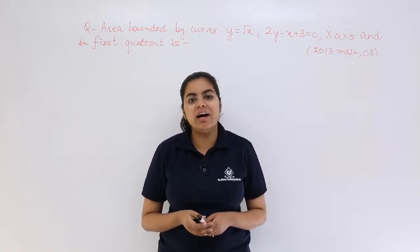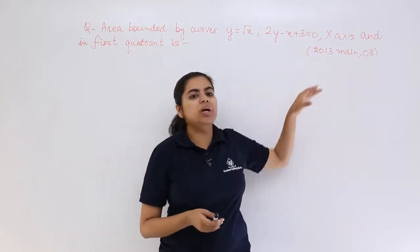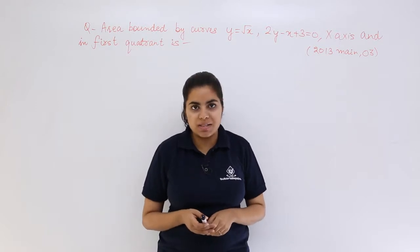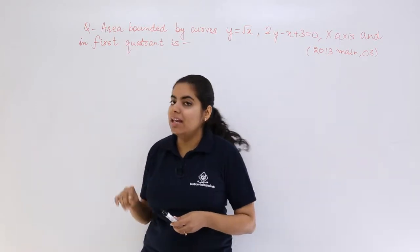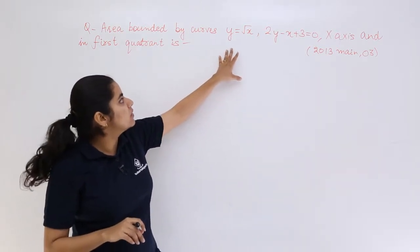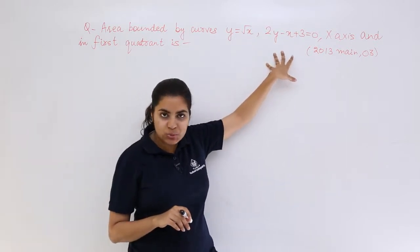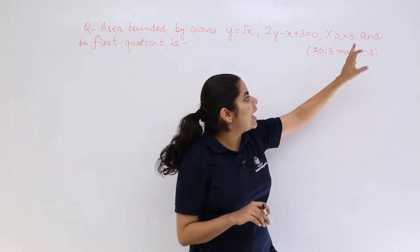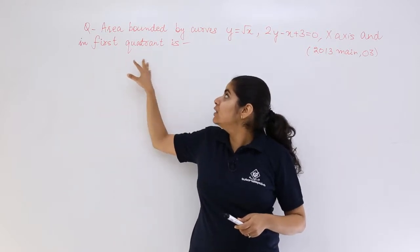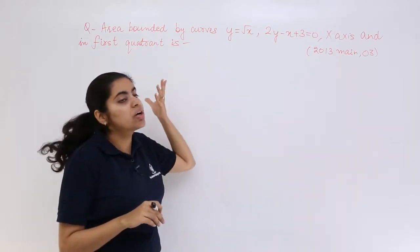Let's see this question asked in the IIT JEE paper 2013 for 3 marks. The question says: area bounded by the curves y equals square root x, 2y minus x plus 3 equals 0, x-axis and in the first quadrant is what?